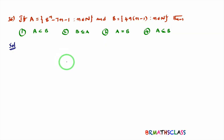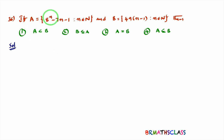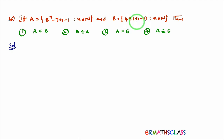Hi friends, I am Balaji Rao. Welcome to BR Max class. Observe this question. Set A is 8 power n minus 7n minus 1, where n is a natural number. Set B is 49 into n minus 1, where n is a natural number. Then which of the following options is correct?